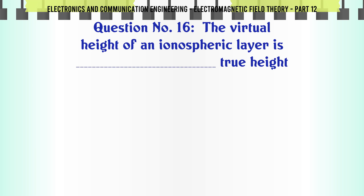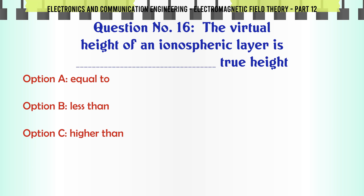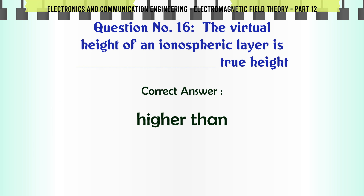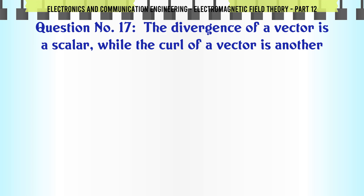The virtual height of an ionospheric layer is true height: A. Equal to, B. Less than, C. Higher than, D. No relation. The correct answer is Higher than.